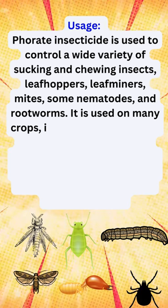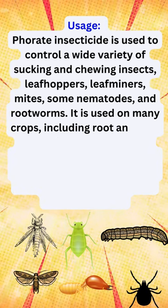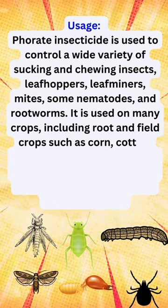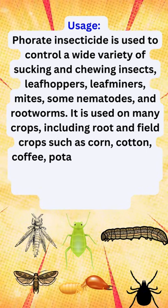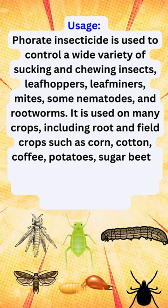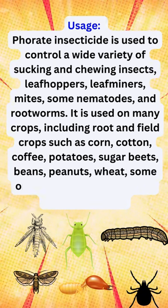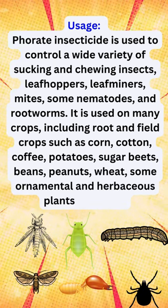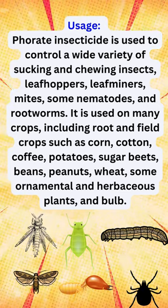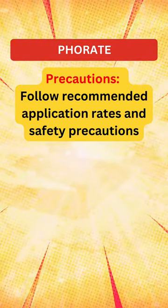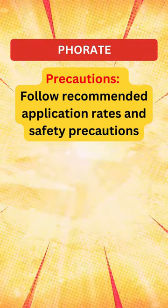It is used on many crops, including root and field crops such as corn, cotton, coffee, potatoes, sugar beets, beans, peanuts, wheat, some ornamental and herbaceous plants, and bulb.